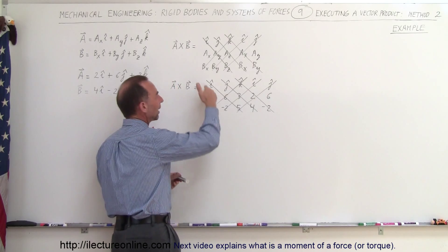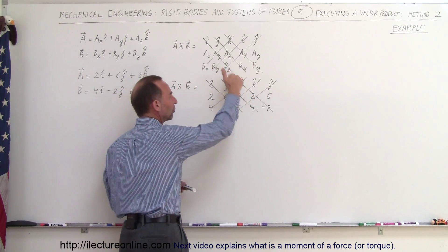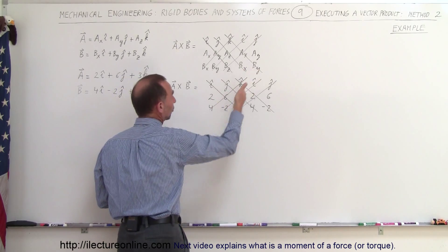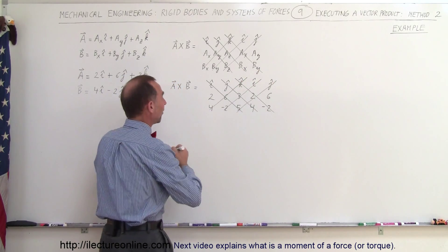And then you simply multiply these three elements, those three elements and those three elements and subtract from that when you multiply those three elements, those three elements and those three elements. So the result will be as follows.